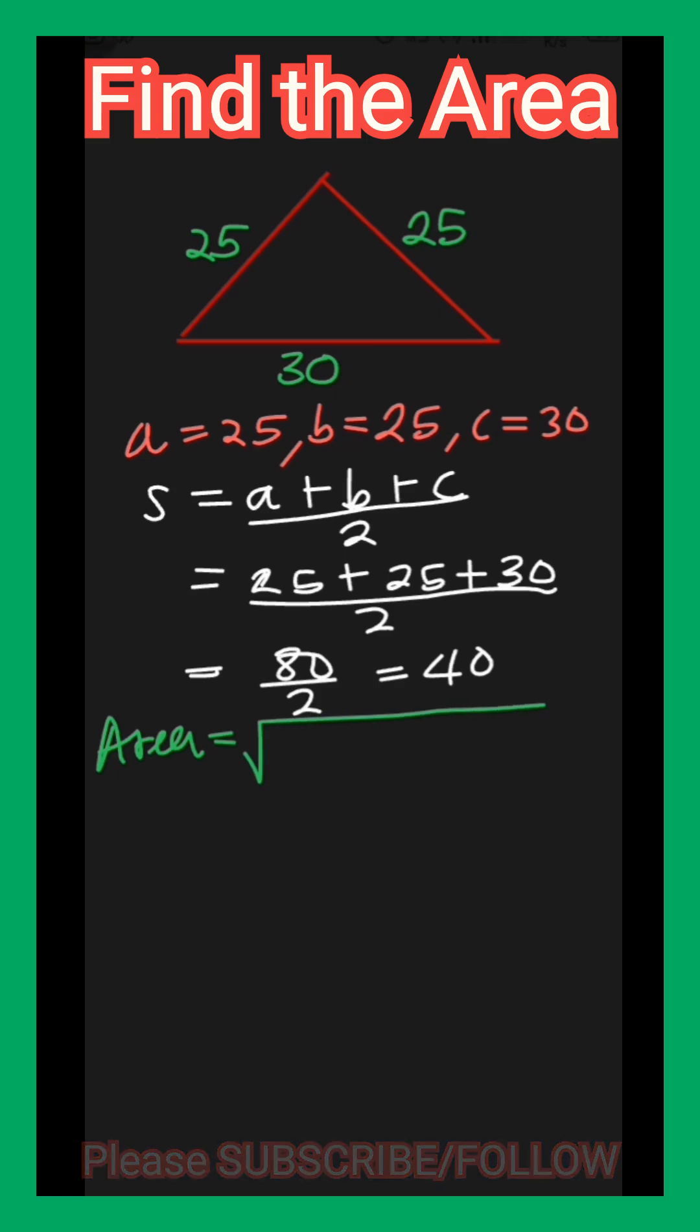Heron's formula is given by the square root of the product of S, S minus A, S minus B, and S minus C.